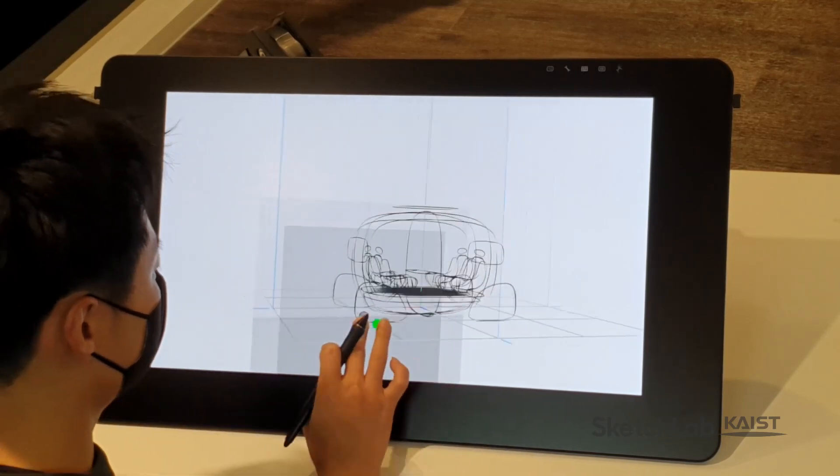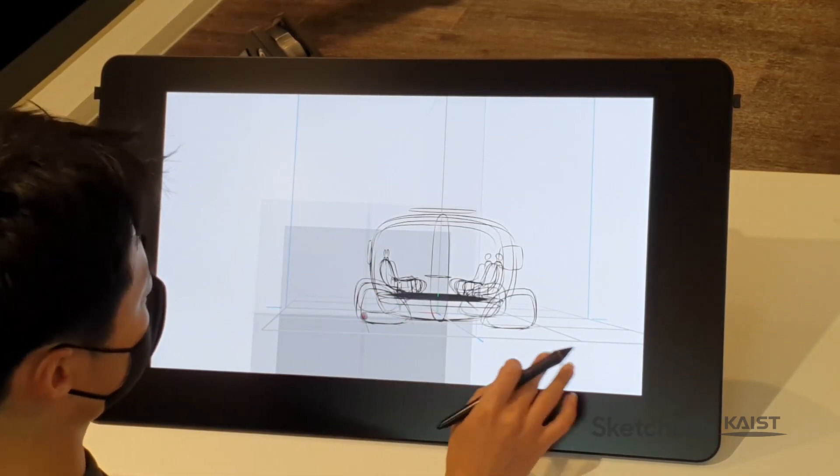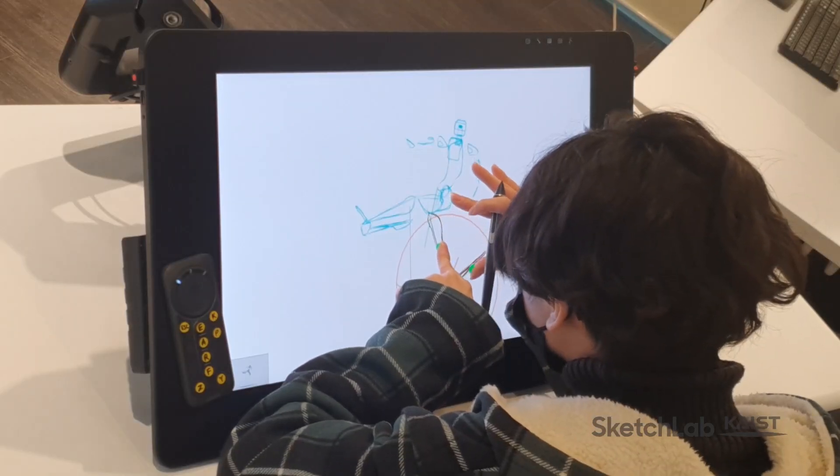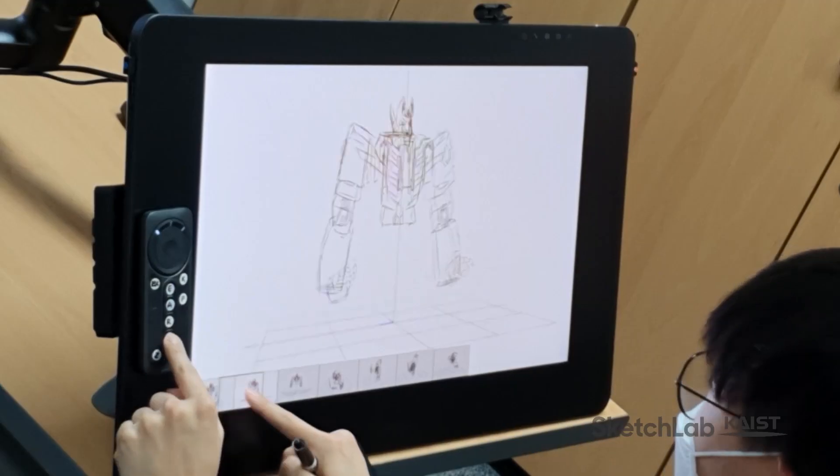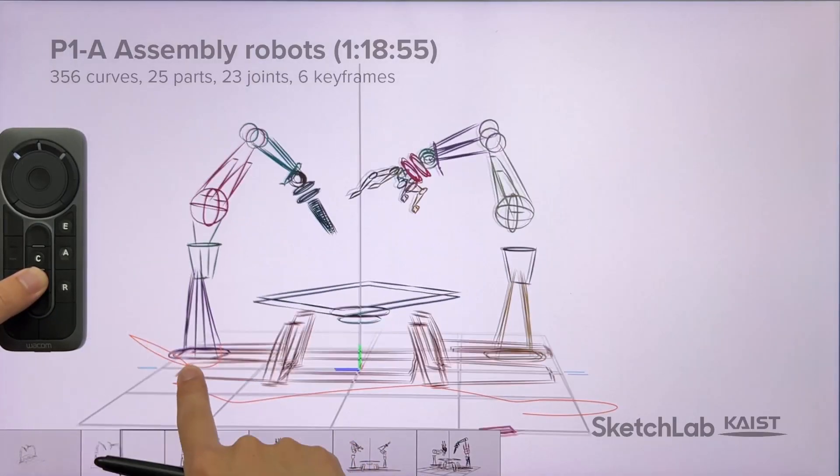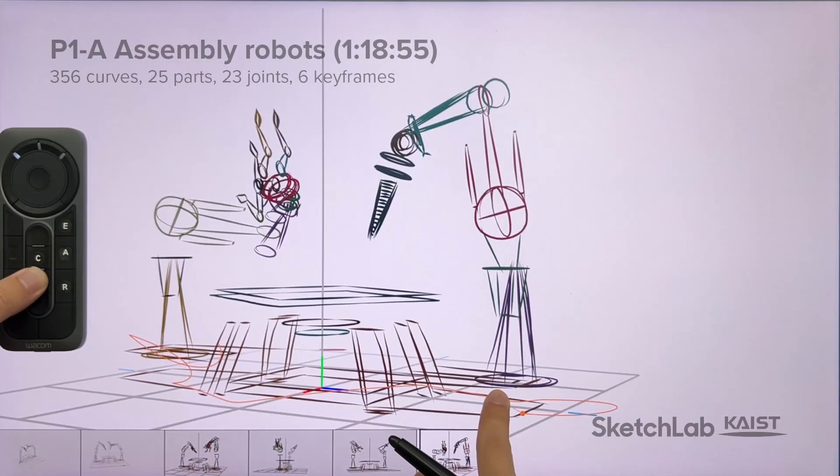For a proof of concept, we recruited five professional designers and asked them to create articulated objects through our system. After only one hour of tutorial, the designers produced compelling concepts such as assembly robots equipped with a gripper, drill, and height-adjustable workbench.